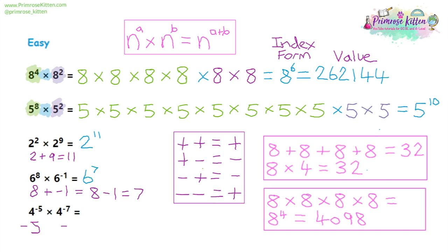In our next example we have four to the minus five times four to the minus seven. So we have minus five plus minus seven, which tidied up gives us minus five minus seven. Doing that sum shows us we get minus 12, so our answer overall is four to the power of minus 12.